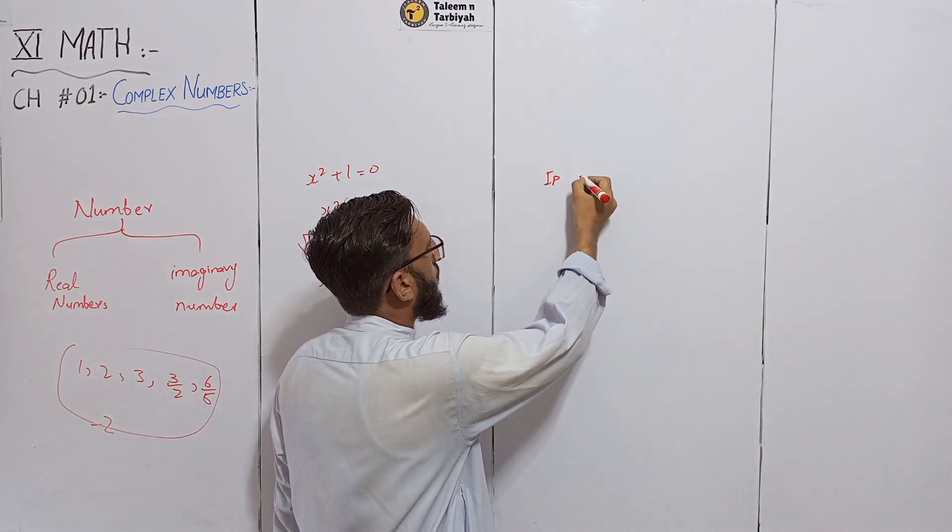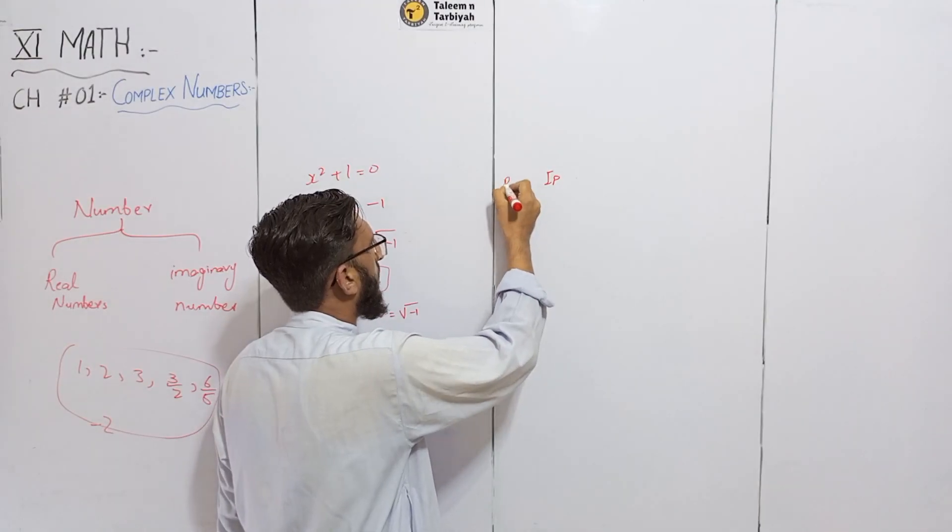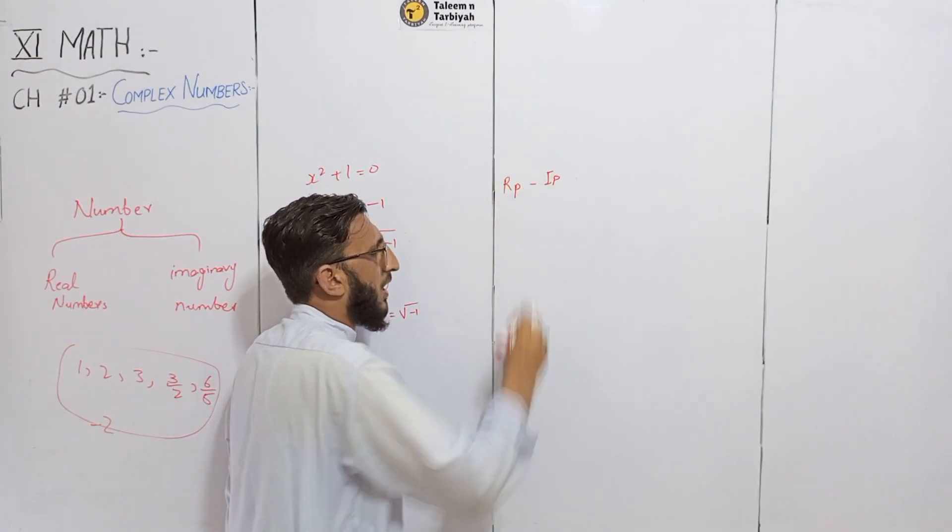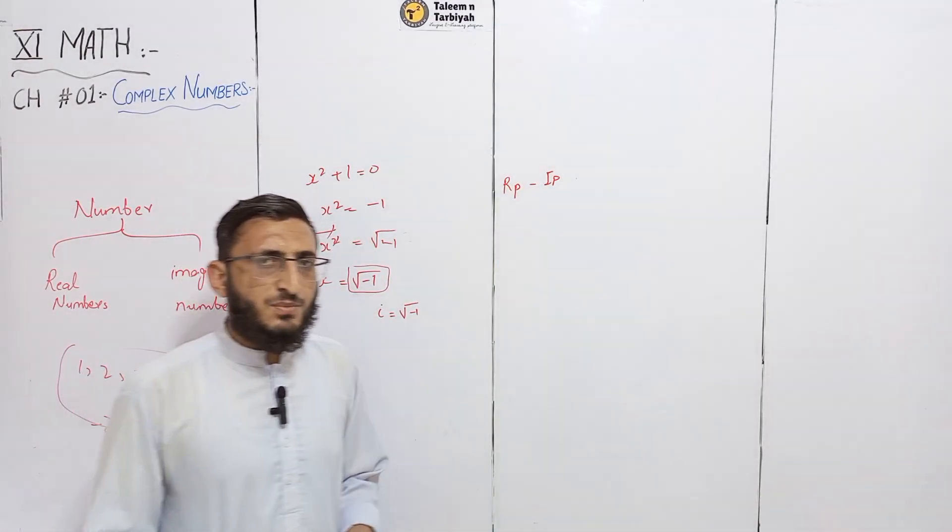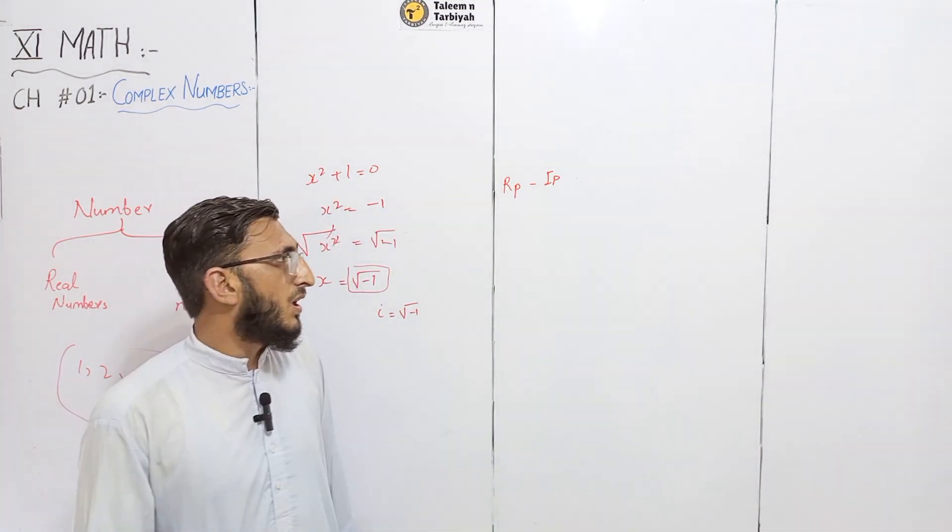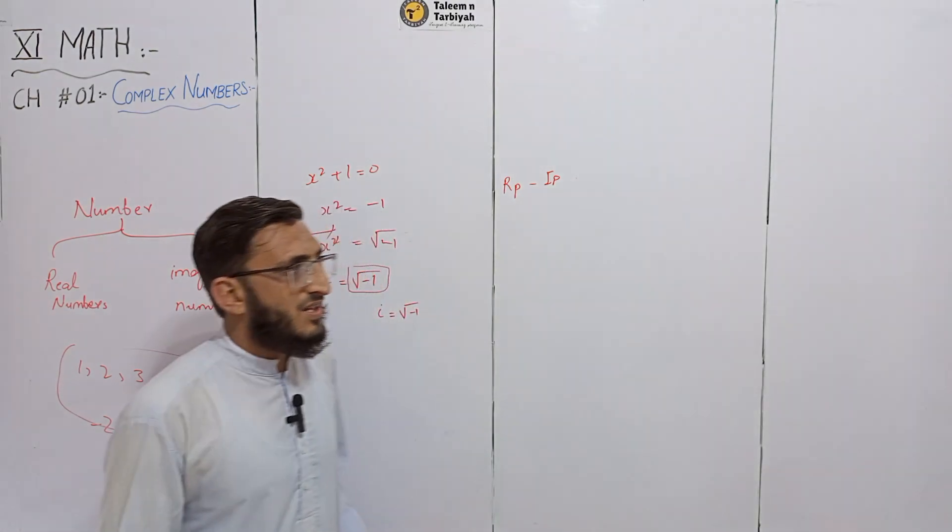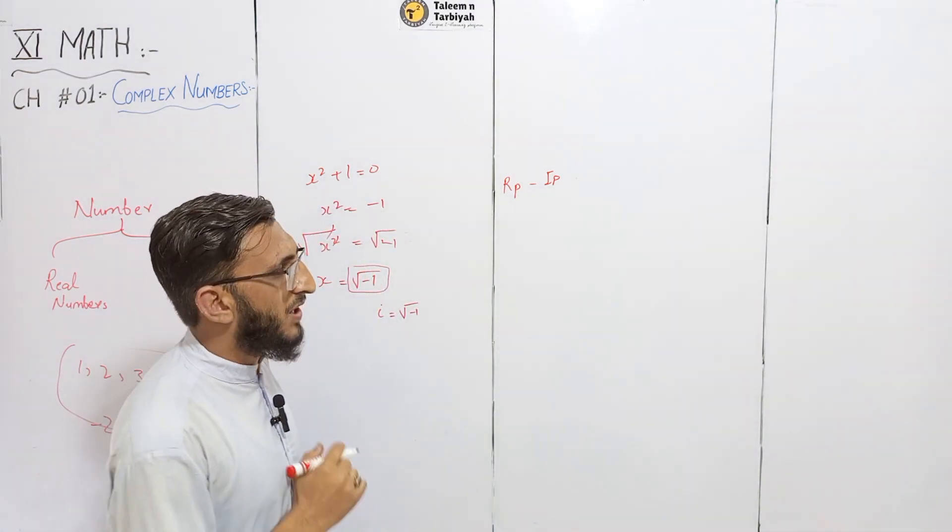Now we have addition, subtraction, multiplication, and division, then we have modulus, conjugate. This chapter we have: complex numbers.